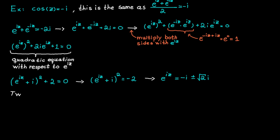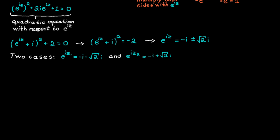Now we have two cases: e to the ic equals minus i minus the square root of 2i, or e to the ic equals minus i plus the square root of 2i. To solve for c, we use the complex logarithm, which is the natural logarithm of the length of a complex number plus i times the argument. The argument has infinitely many values, so we use the principal argument, which equals the principal argument plus 2pi times n, where n is an integer.